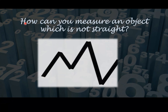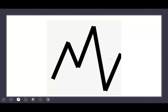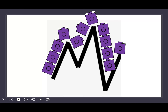My question for all of you is: how can you measure an object which is not straight? In our previous lessons all the objects were straight — we placed cubes below them and it was easy to measure. But how can you measure something which is not straight? Here, as you can see, there is a curved line. If I place my cubes along it like this, will this give me the correct answer? No, this is not the correct way to measure a curved object.